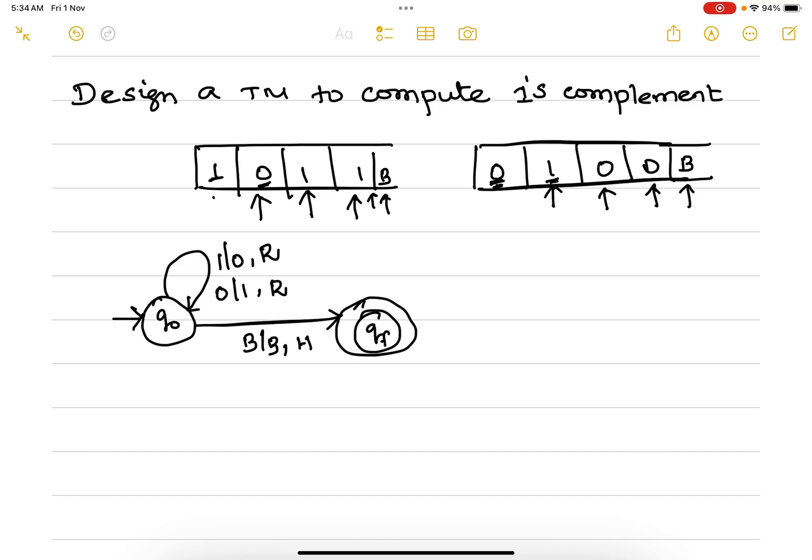What will be the transition table? States: q₀, qf. Tape symbols: 0, 1, and blank. When you have q₀ with zero, you remain in the same state, change to 1, and move towards right. Same thing for q₀ with 1: remain in the same state, change to 0, and move towards right.